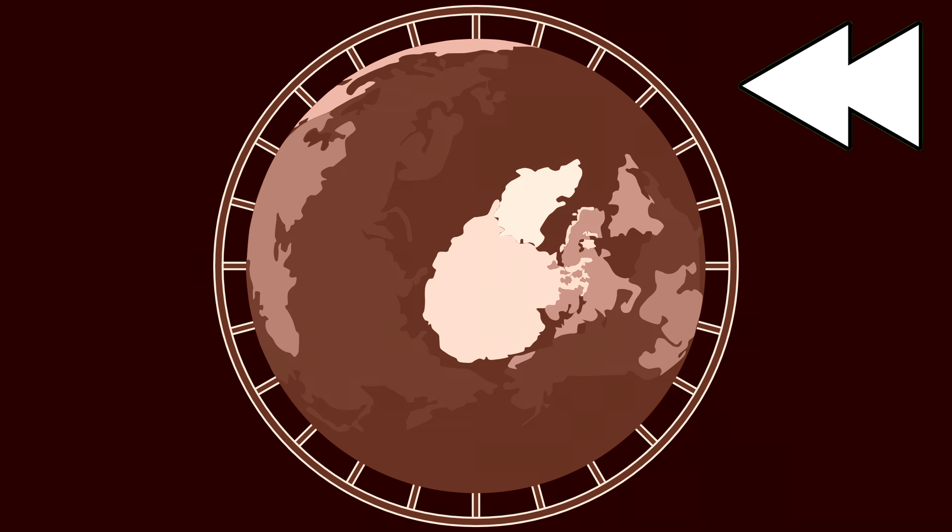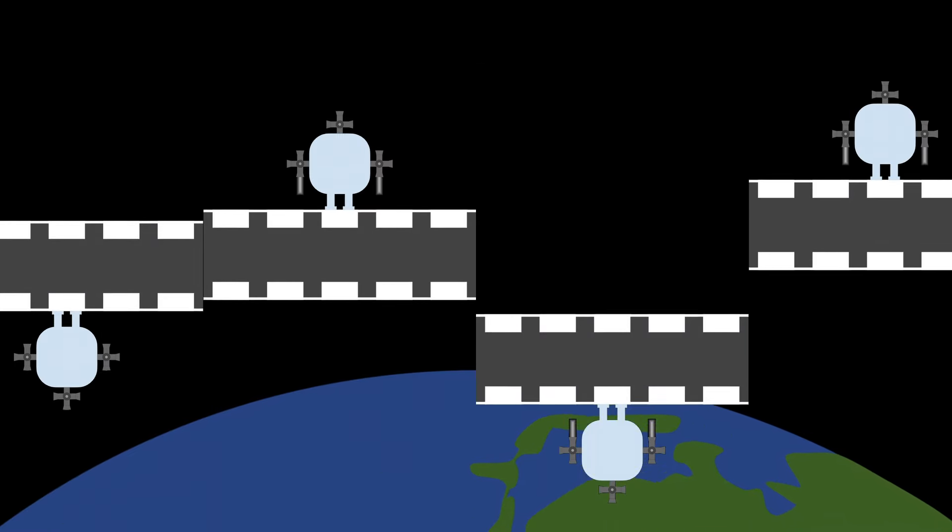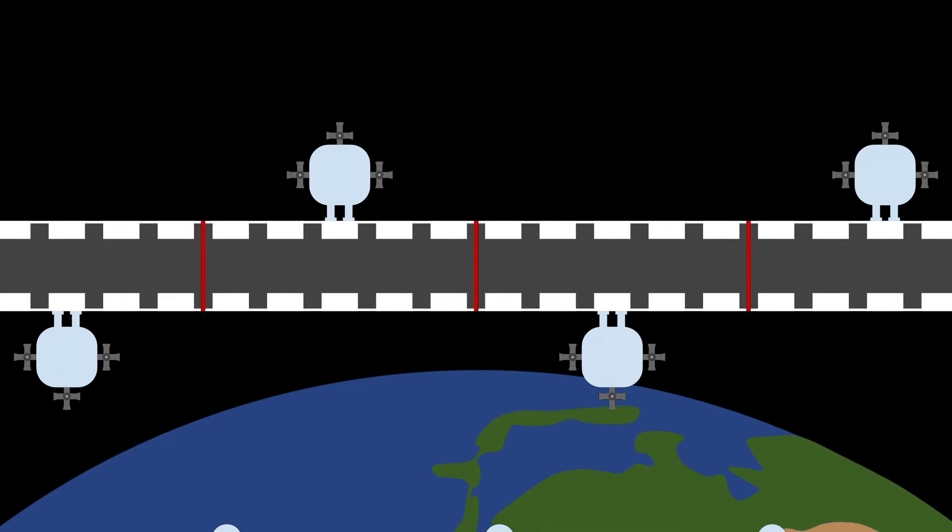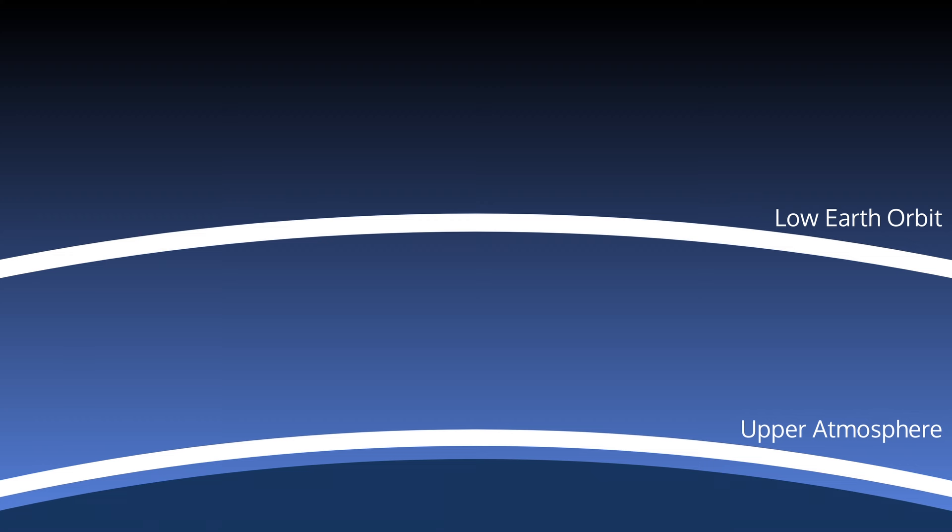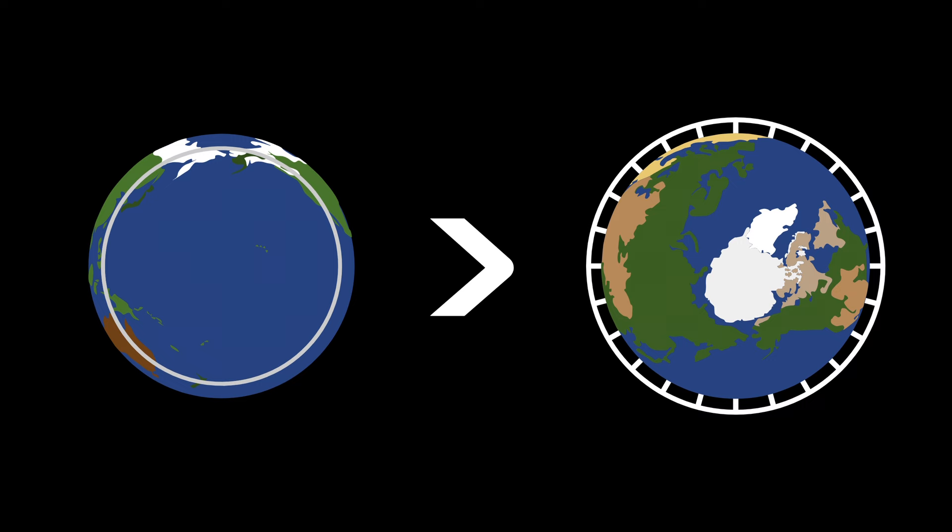Looking back at the orbital ring concept, we see that it wouldn't have this freedom. It would have to be built in space, which would require a massive amount of pre-existing orbital infrastructure, and it couldn't be built in the upper atmosphere, so it would be exposed to the harsh environment of low Earth orbit. The tethered ring is clearly the more practical option.